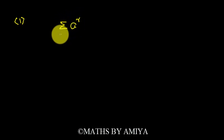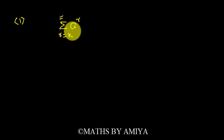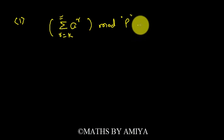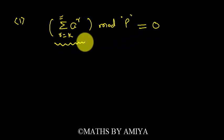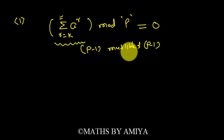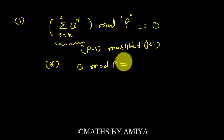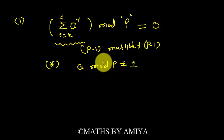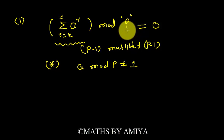Concept number one: when we have a summation of consecutive powers — that is, a sigma of a^r where r varies from k to some number — and this sum is divided by a prime p, then the remainder should be zero, if the total number of terms in the sigma is either p minus one or a multiple of p minus one. The condition is that a divided by p should not give remainder one.